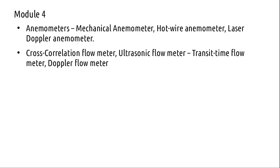Anemometers can also give direction of flow. This module has two parts: one discusses anemometers — we will cover mechanical anemometers, then hot wire anemometers, and then laser Doppler anemometers. The second part covers flow meters, which was originally supposed to be in the third module but was shifted to the fourth module, probably because the third module became too bulky.